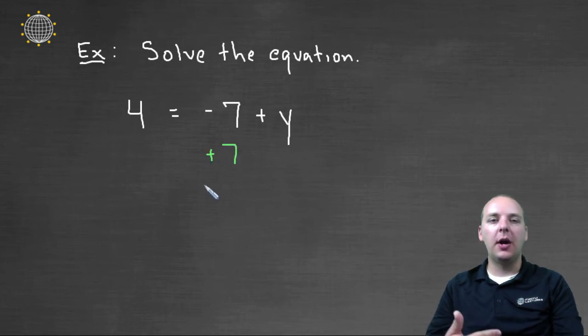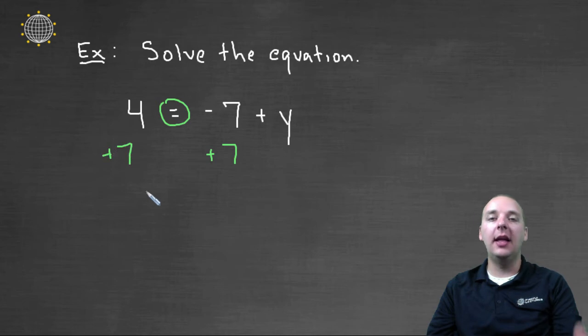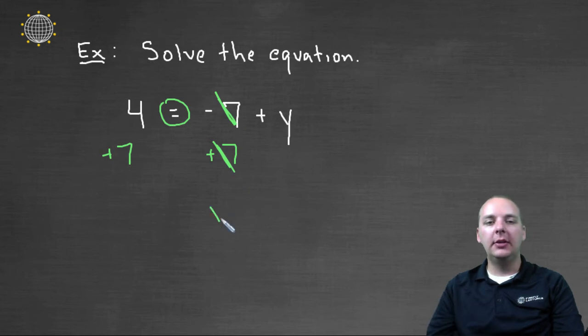So the opposite of that would be to add seven to the right hand side. But remember the addition property, if you add seven to the right to keep this equality maintained right here, you also have to add seven to the left, so that everything stays balanced. Minus seven and plus seven, they cancel. And so we get eleven, four plus seven,